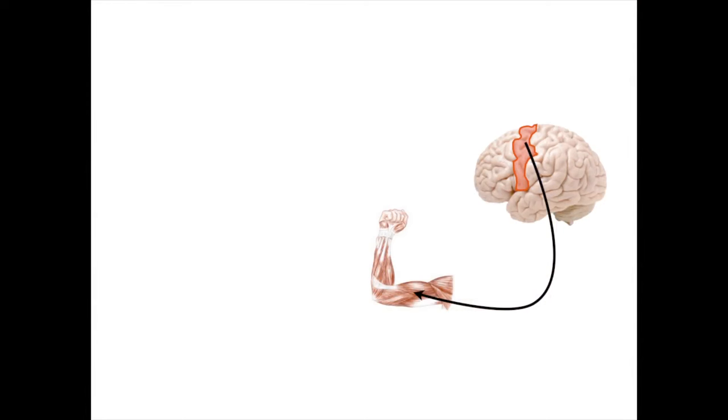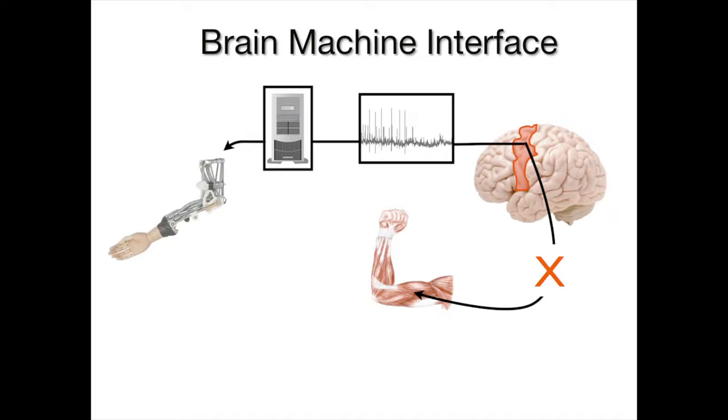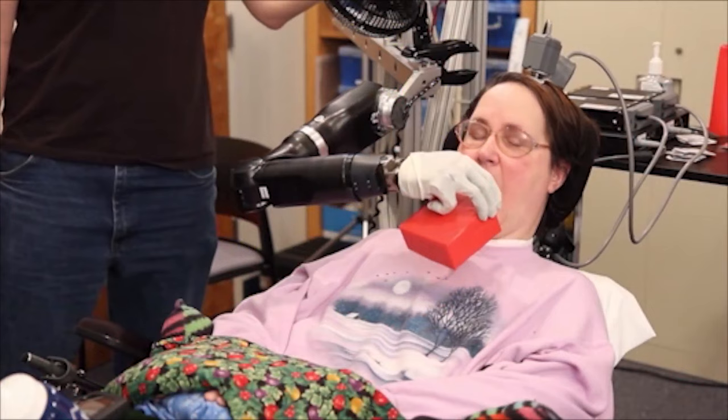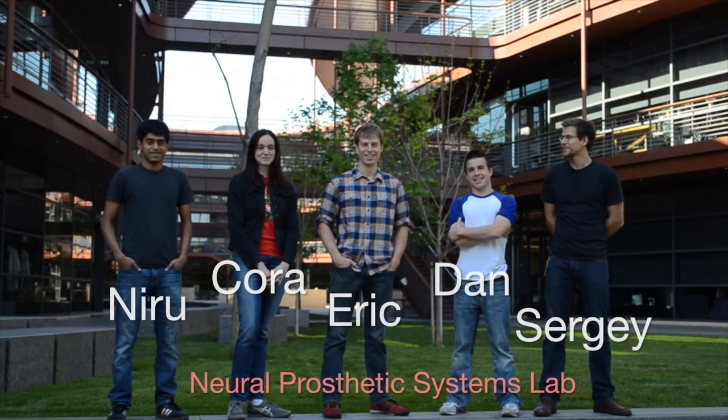For these patients, signals in the brain that would ordinarily control arm movement are unable to get to the muscles. However, we can record these signals directly from the motor cortex and decode them using an algorithm that translates neural activity into the movement of a computer cursor or robotic arm. In this manner, a patient will be able to naturally control a prosthesis.